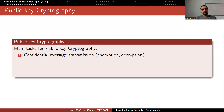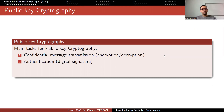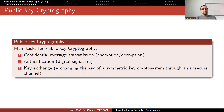Public key cryptography solves three main problems. First, confidential message transmission — encryption and decryption — where we will talk about RSA and Diffie-Hellman. Second, authentication, done by digital signatures — we will talk about the Digital Signature Algorithm and Elliptic Curve Digital Signature Algorithm. Third, key exchange: exchanging the key of a symmetric key cryptosystem through an unsecured channel, which is what Diffie and Hellman proposed.